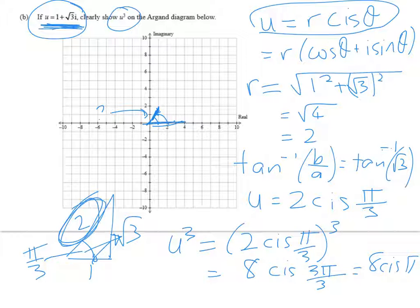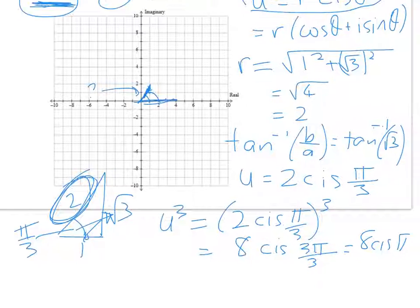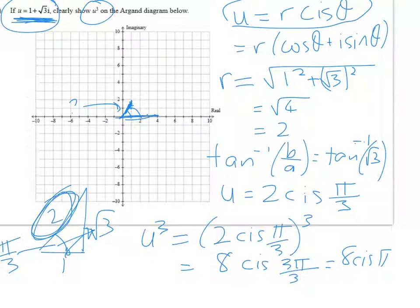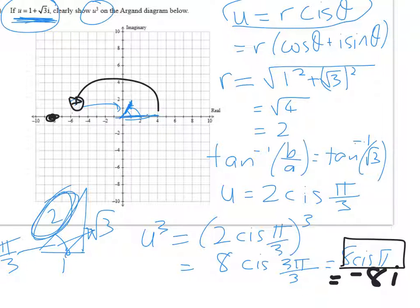Okay, so 8 cis pi is just going to equal negative 8i. The reason it's going to be negative 8i is that it's a line with a length of 8 and an angle of pi. So that takes me around to, if I think about rotating that, length of 8, so my point u cubed is going to be here. So we have u cubed is equal to negative 8i.